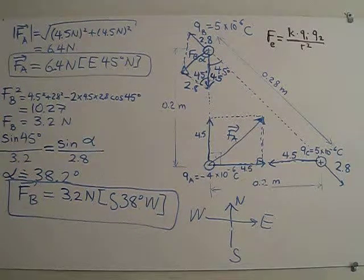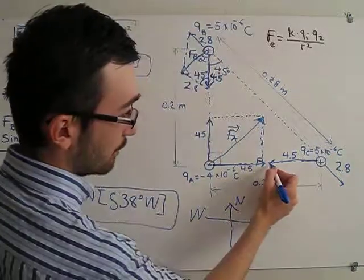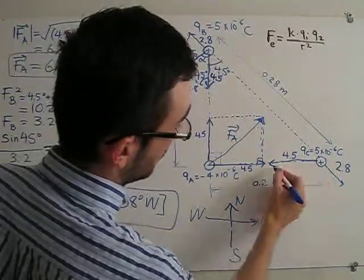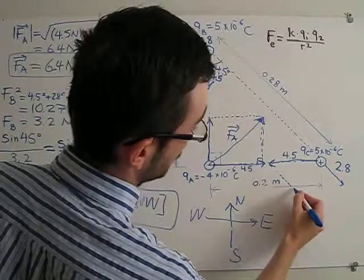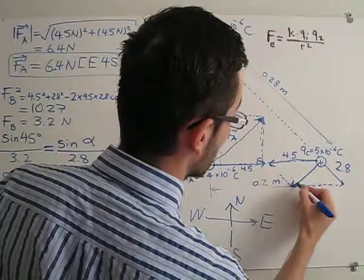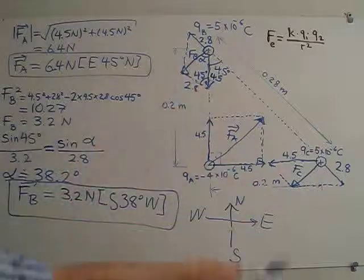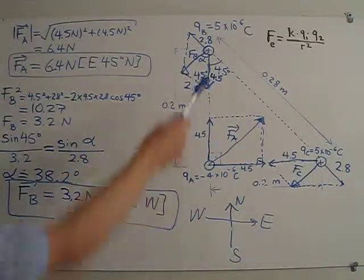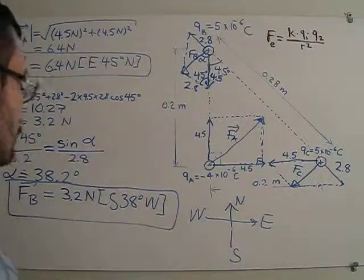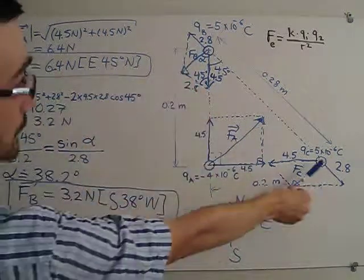Now let us consider FC. Using the parallelogram method similarly, we draw the parallelogram and calculate this magnitude and direction. The calculation will be very similar to that for FB. In fact, the magnitudes will be the same for FC and FB, but the direction will be different.